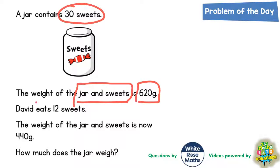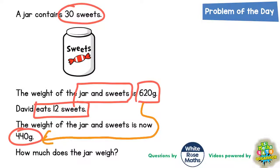But David is eating 12 sweets. The weight of the jar and the sweets is now 440 grams. How much does the jar weigh? Well, the first thing to do is to figure out how much weight has disappeared from the jar when his 12 sweets have gone, because that's how much his 12 sweets must have been worth.